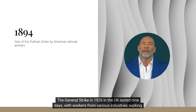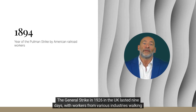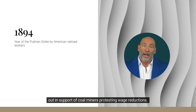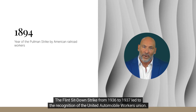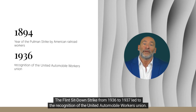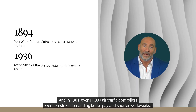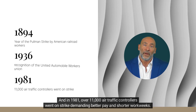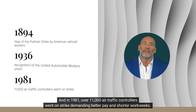The general strike in 1926 in the UK lasted nine days, with workers from various industries walking out in support of coal miners protesting wage reductions. The Flint sit-down strike from 1936 to 1937 led to the recognition of the United Automobile Workers Union. And in 1981, over 11,000 air traffic controllers went on strike demanding better pay and shorter workweeks.